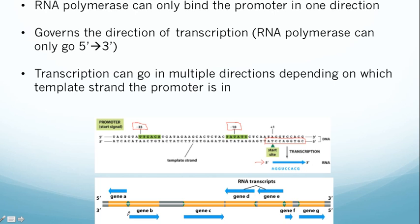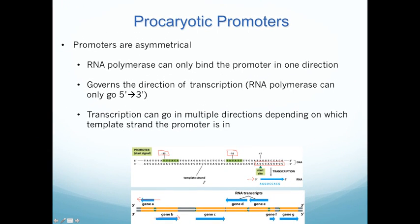If you look at this figure, gene B could be made in one direction; however, if the promoter was on the alternate strand, gene A could be made in the opposite direction. So both strands of DNA can code for different RNA transcripts. The direction and which strand is coding for the transcript is governed by the role of the promoter — wherever the promoter is tells you which direction the RNA polymerase goes and which strand is being copied.